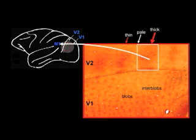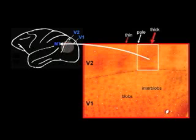The projections to MT from V2 arise from the thick stripes of V2. Thus far, there has been little evidence to suggest that V2 is involved in motion processing. However, given that V2 provides inputs to MT, we decided to take a closer look.